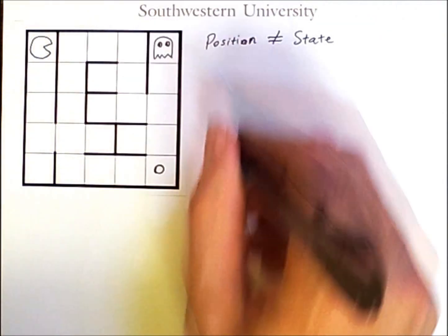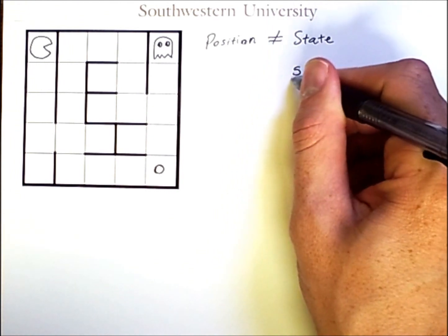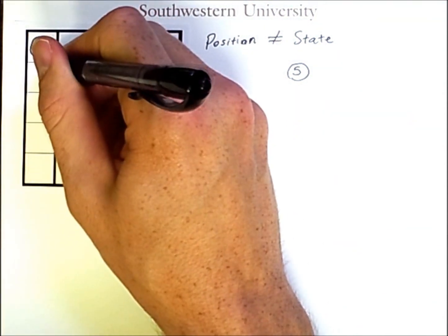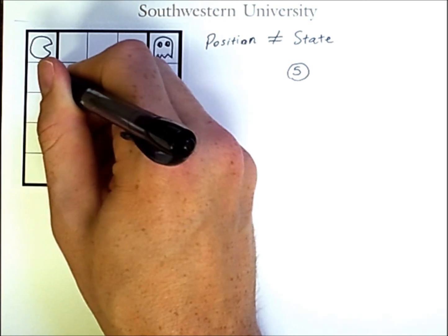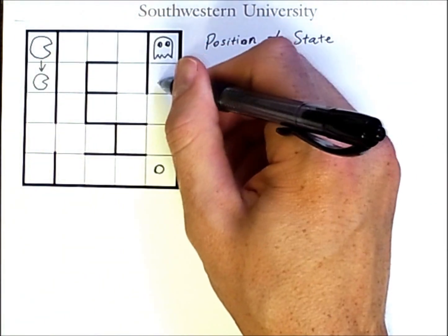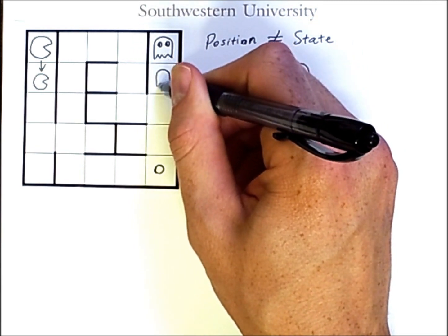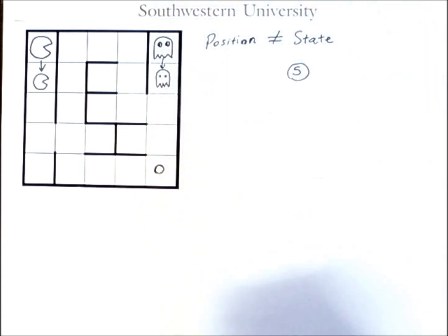So, this whole situation here is the start state. Now, Pac-Man can move down, in which case the ghost will also move down since that will bring it closer to Pac-Man.